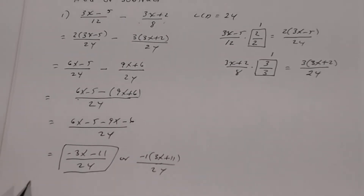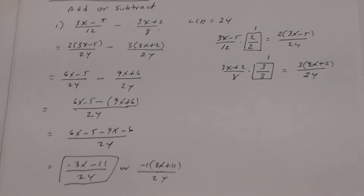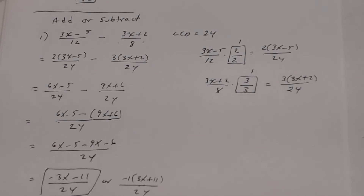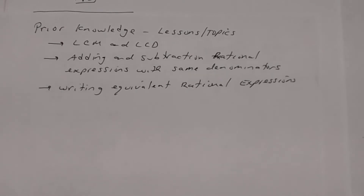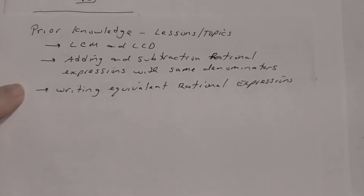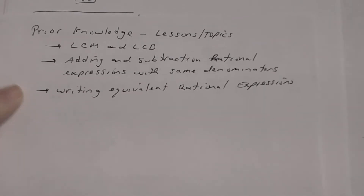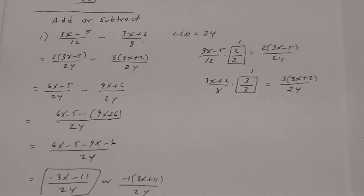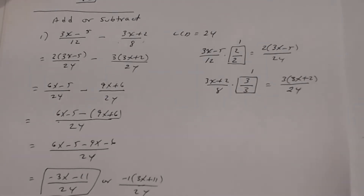The GCF of the numerator is 1, so there's nothing to factor out that reduces. The answer is (−3x − 11)/24. You could factor out −1 to get −(3x + 11)/24, but leaving it as −3x − 11 over 24 is fine. Make sure you have mastered all these prerequisite topics from previous lessons.